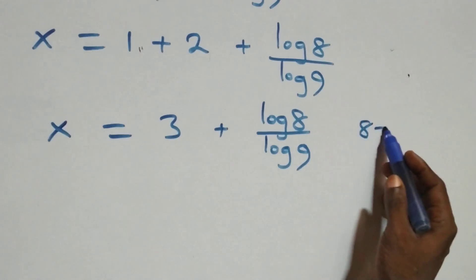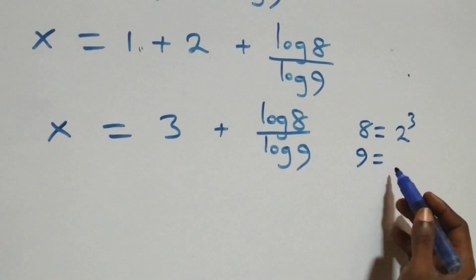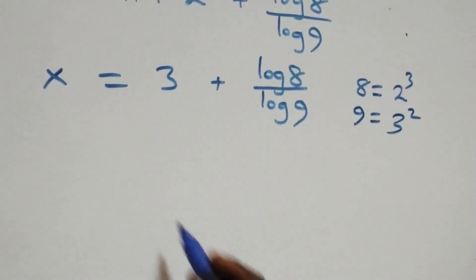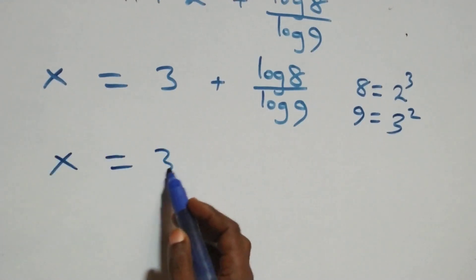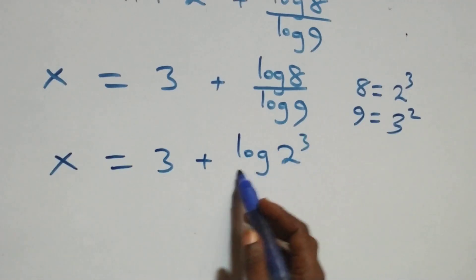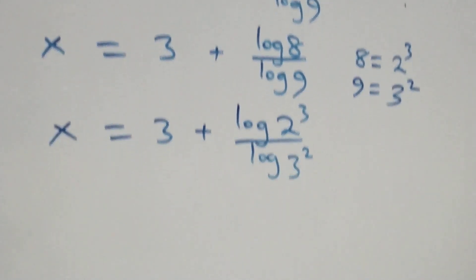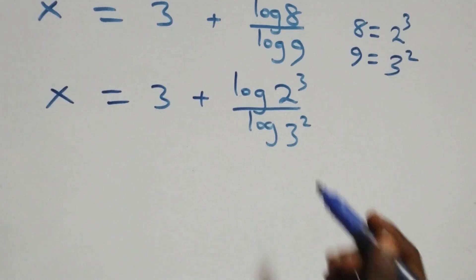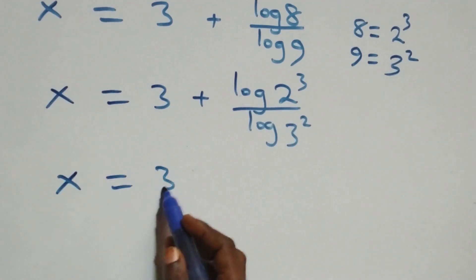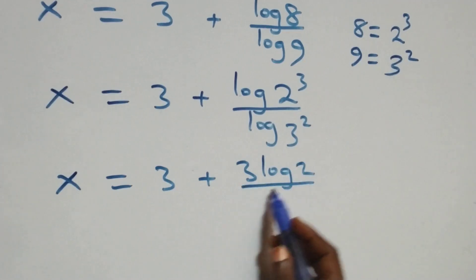Eight can be written as two times two times two, which is two raised to power three. Nine can be written as three times three, which is three squared. So x equals three plus log two raised to power three over log three squared. Applying the power rule of logarithm, x equals three plus three log two over two log three.